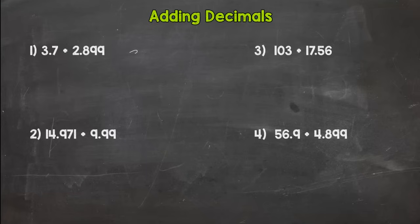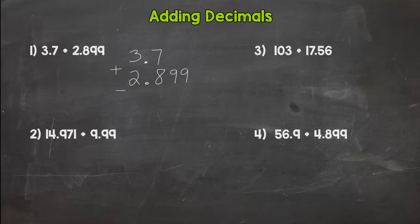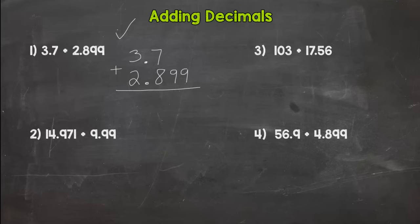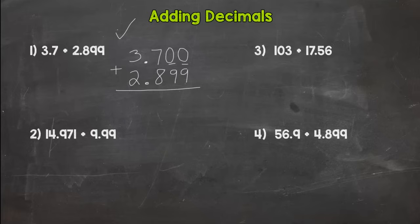Our first and main rule is when we add decimals, in the setup, you need to line up your decimals. That will line up all of your place values for you, which is the important thing when it comes to adding decimals. Now it looks a little offset, but if you're familiar with equivalent decimals, you know you can add zeros to the right of a decimal and it does not change the value. So I'm going to put a couple of placeholder zeros here so both numbers go to the thousandths place.